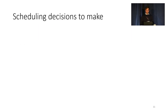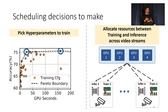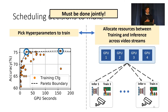In this scheduling problem, there are two key decisions that must be made. First, for each video stream, the scheduler must pick the retraining configuration. Second, the scheduler must also allocate resources between training and inference across different video streams. Importantly, these must be done jointly. For instance, if a video stream gets more GPU time, it can pick a more expensive configuration to maximize its accuracy. Similarly, if a low-cost configuration is chosen for a specific model, the scheduler can divert extra resources to other video streams.